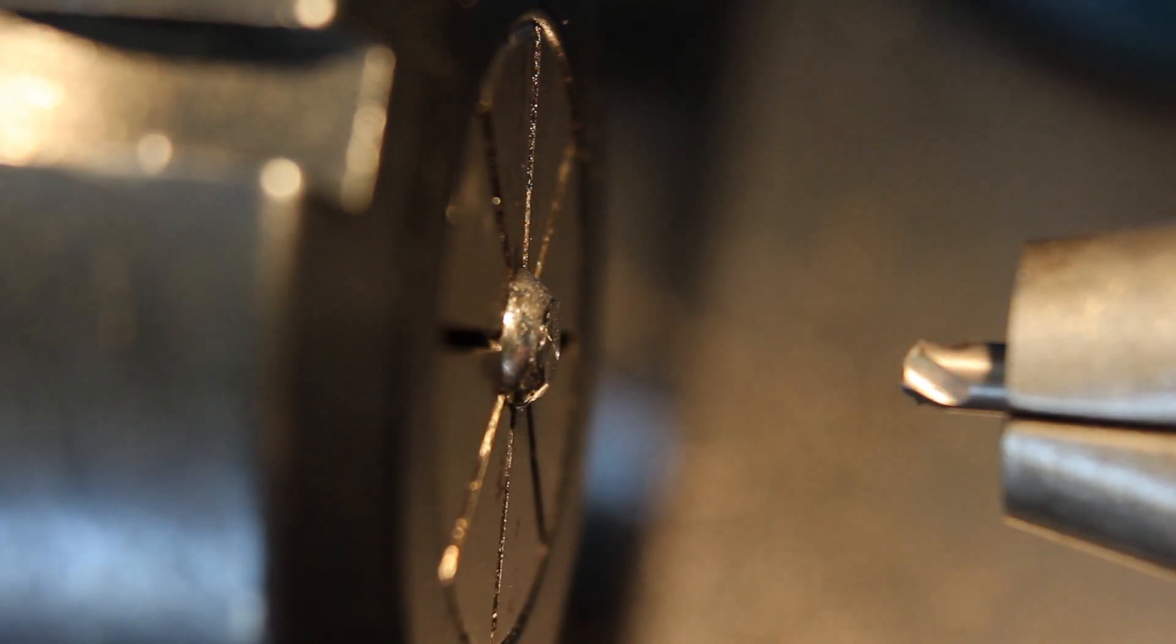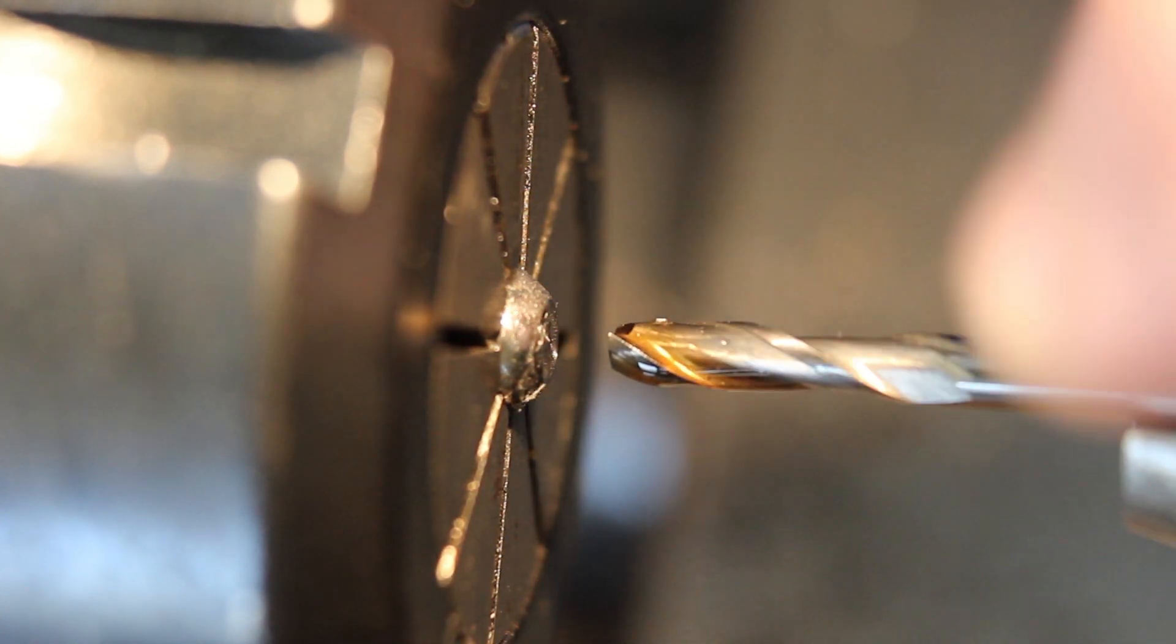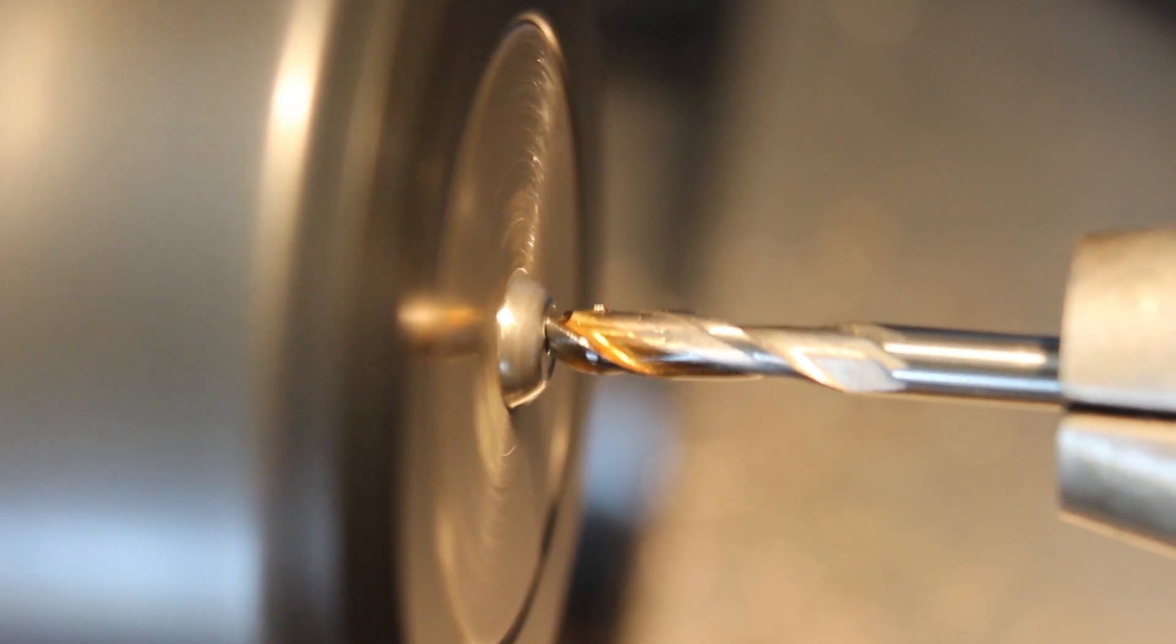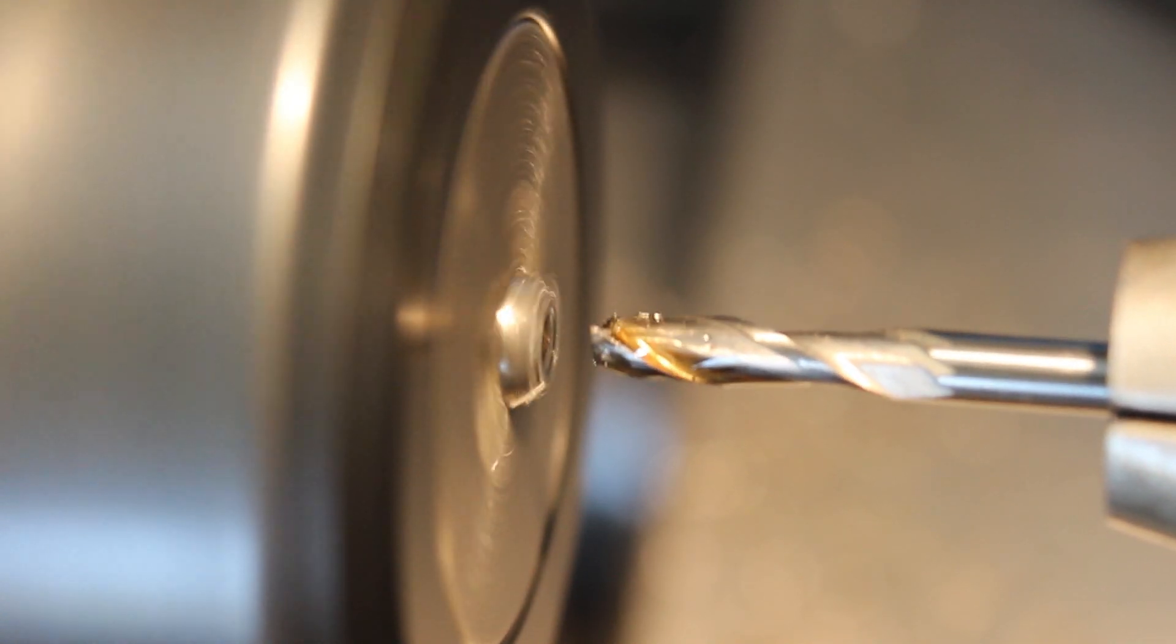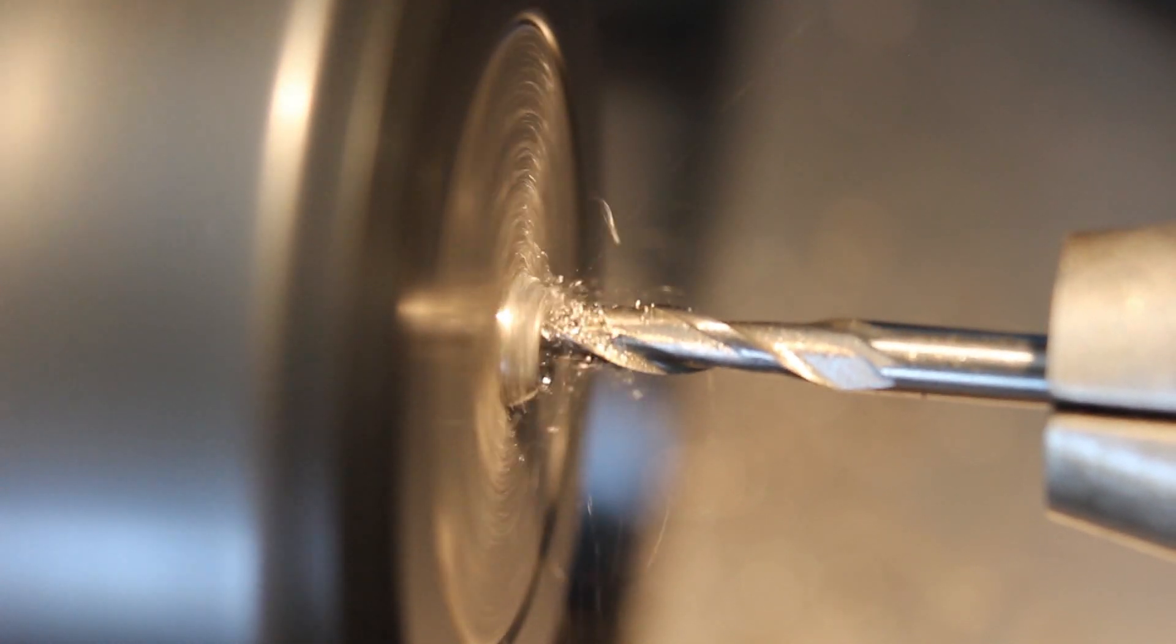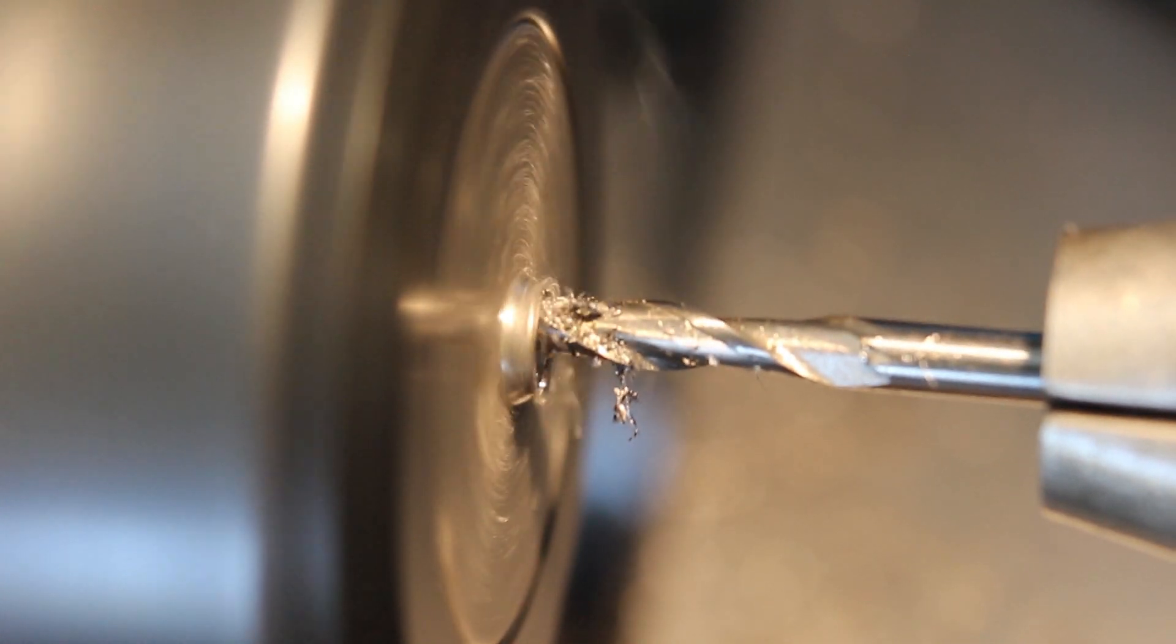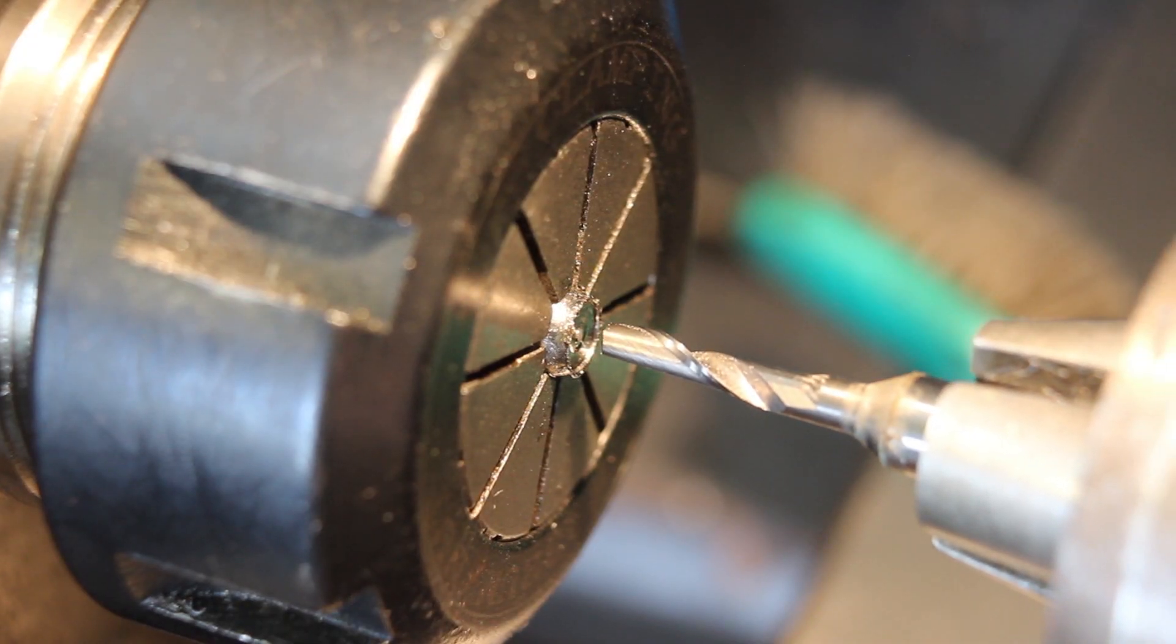This is a two flute proper carbide end mill from a reputable manufacturer. Having said that, it's quite blunt on the sides but the end seems to be quite sharp. Let's have a go with another cut - this is a one flute three millimeter, what do you call that, is it an end mill? I don't know, anyway, let's see if this does it.